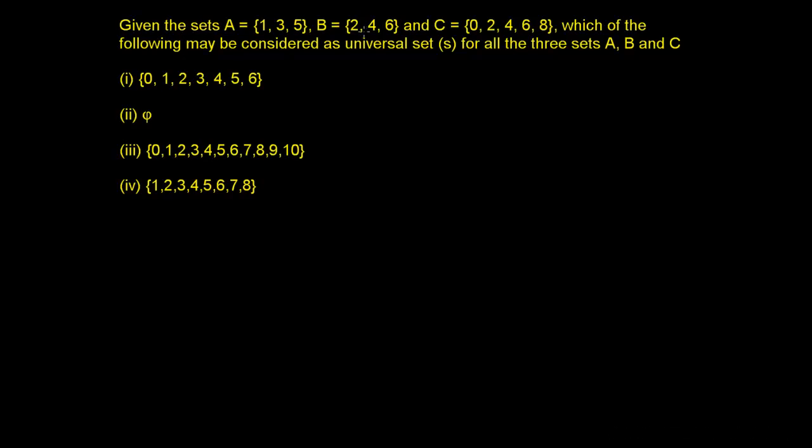If the sets A = {1, 3, 5}, B = {2, 4, 6}, and C = {0, 2, 4, 6, 8}, which of the following may be considered as a universal set for all the three sets A, B, C?